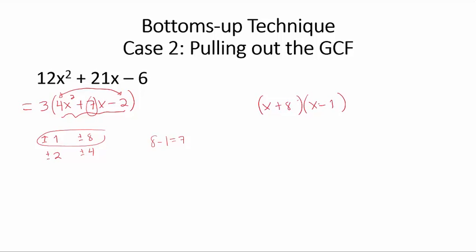We will now divide the constant terms in those binomials by the quadratic coefficient, which is 4. This becomes x + 2. Since 2 is an integer, we stop there. We don't do anything else to that binomial.